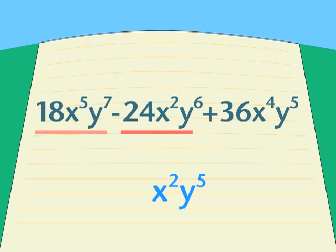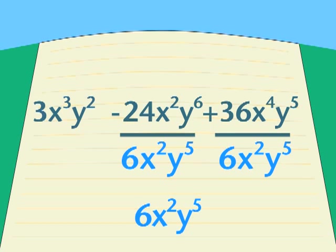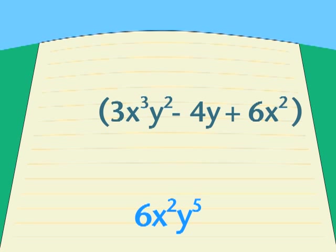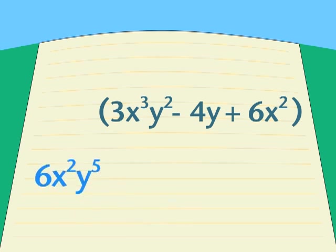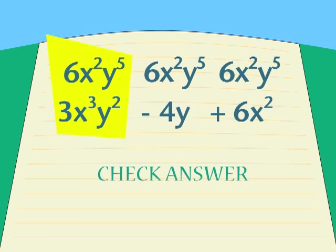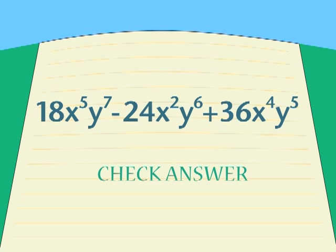X squared and y to the fifth power are the largest common factors I can find. I can't find anything else in common, so 6x squared y to the fifth power is the common factor. So I take what's left in each of the three terms, put it in brackets, put my common factor on the outside, and that's my answer. I multiply it out to check the answer. And it works!